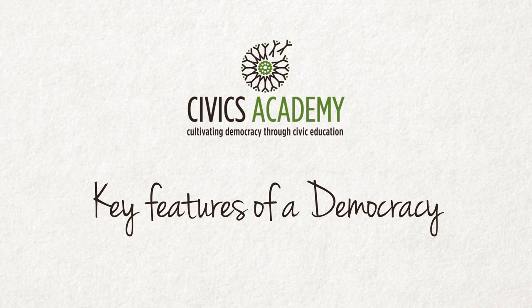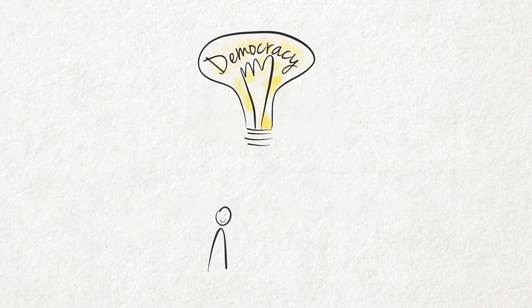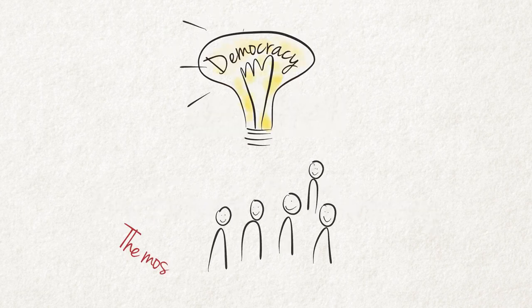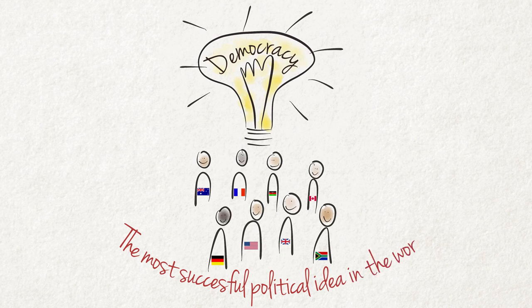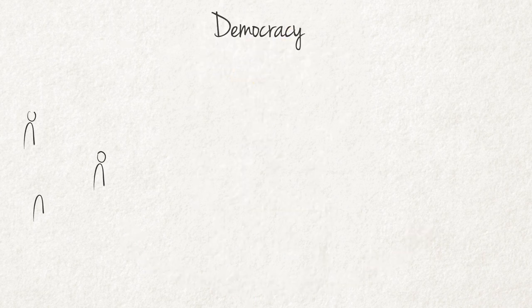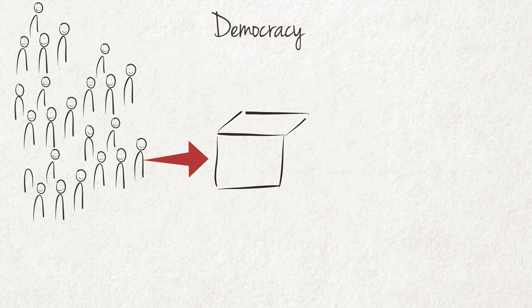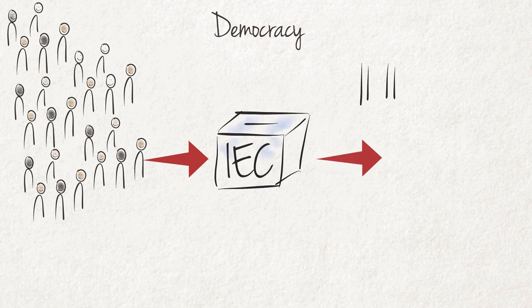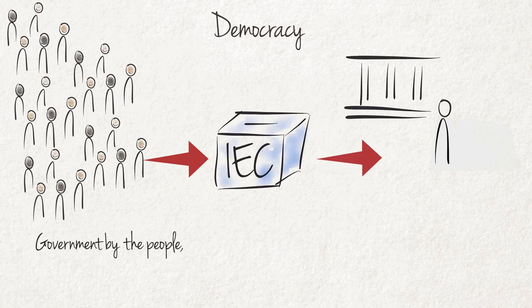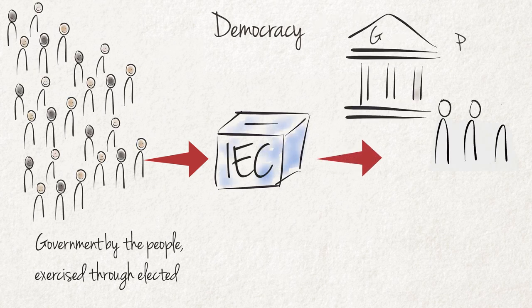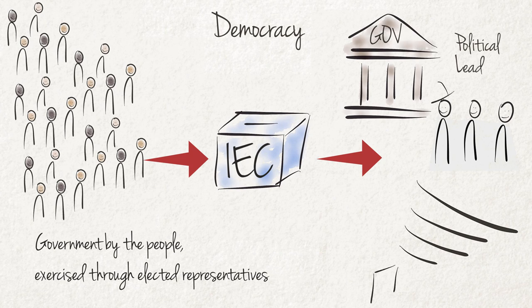What are the key features of democracy? Democracy is the most successful political idea in the world. Democracy allows ordinary people a decisive say in who governs a country and how they govern it. It is based on a system of government by all citizens of a country, typically exercised through elected representatives.